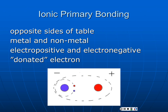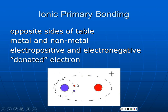There are three primary bond types. The first is the ionic primary bond. Basically, we have atoms on opposite sides of the periodic table — more generally, a metal and a nonmetal. We need significant differences in electronegativity: one atom wants to take electrons, the other won't hang on to them strongly. We get a donated electron, one atom loses an electron and becomes a positive ion, the other takes the electron and becomes a negative ion. Opposites attract, and you have an ionic bond.